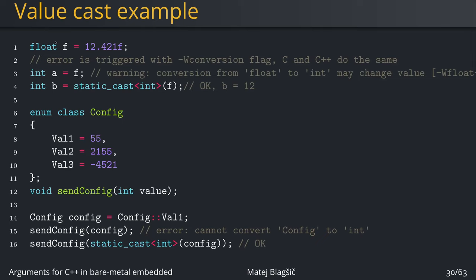Now let's go through some examples to really illustrate these points. For value cast, we have an f which is of type float and has this particular value. If we just try to stuff this f into an int, we get a warning: conversion from float to int may change value. This warning is produced by enabling the -Wconversion flag, and it works both for C and C++. You have to add the casting in order to remove this warning.